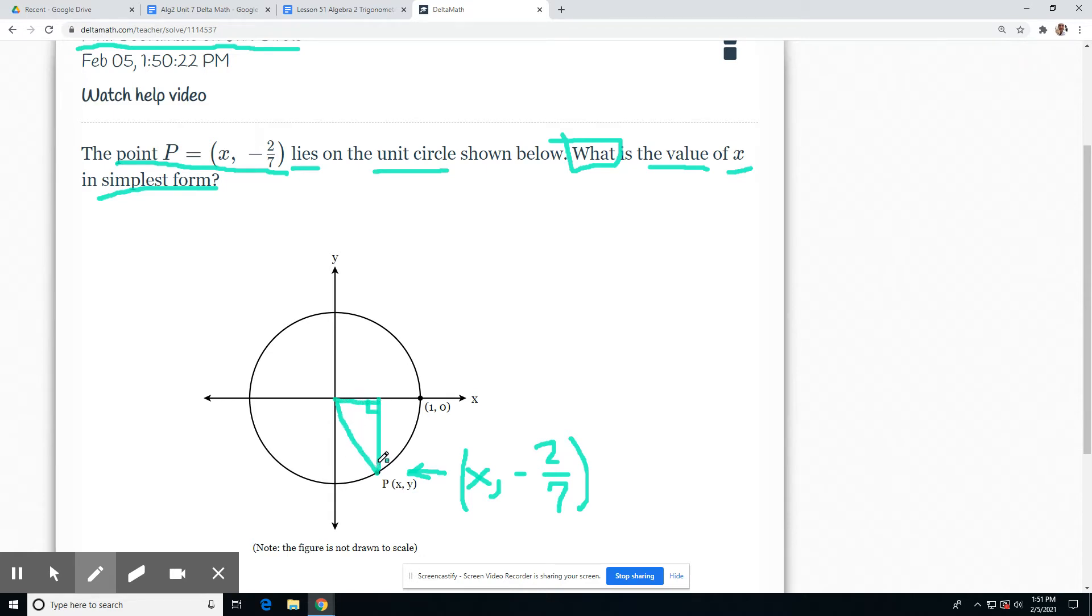We know that since this is a unit circle, the radius is always 1 on a unit circle. So from the center to the end will always be 1 here. And then the X value is what we're looking for, so I'll just call this side X. And then this side right here, I wouldn't say negative 2 over 7. I would just call it 2 over 7 and then we can worry about the negatives later.